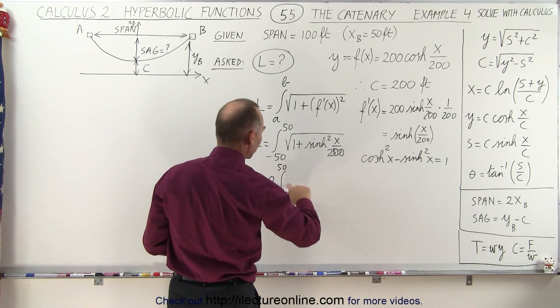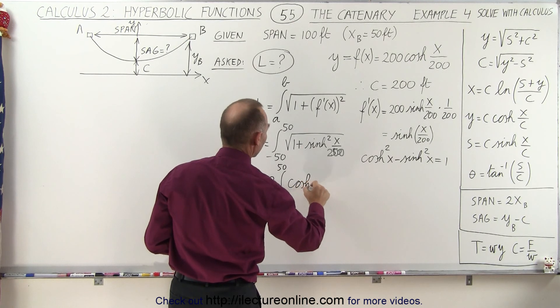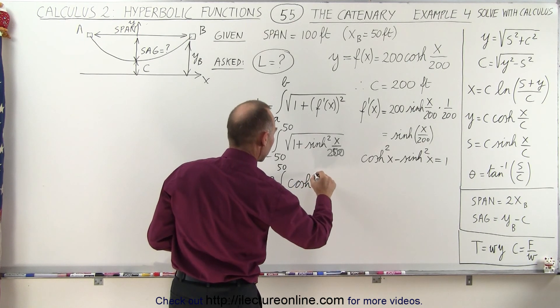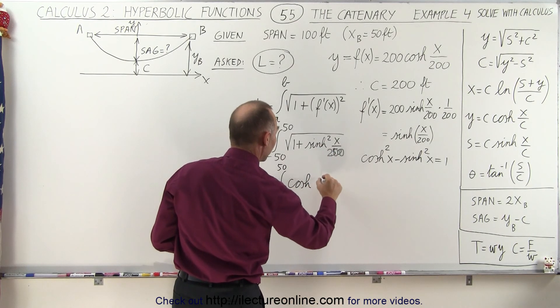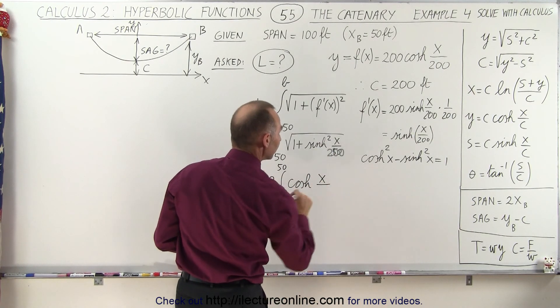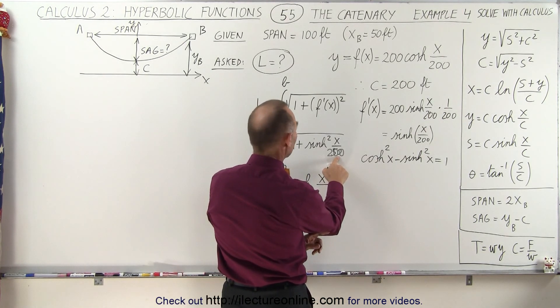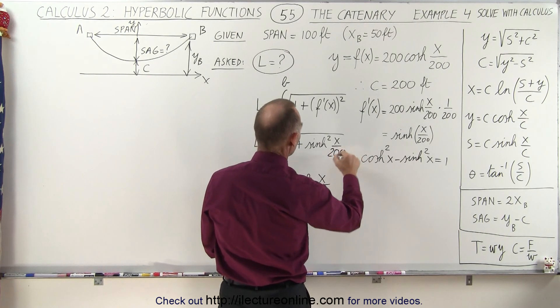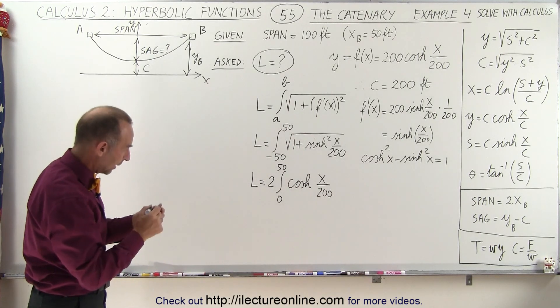Instead of this, we have the square root of the hyperbolic cosine squared, which simply gives us the hyperbolic cosine to the first power because the radical takes care of the square of x over—let's see here, do we have x over 50? No, we don't want x over 50. We want x over 200. So this will be x over 200.